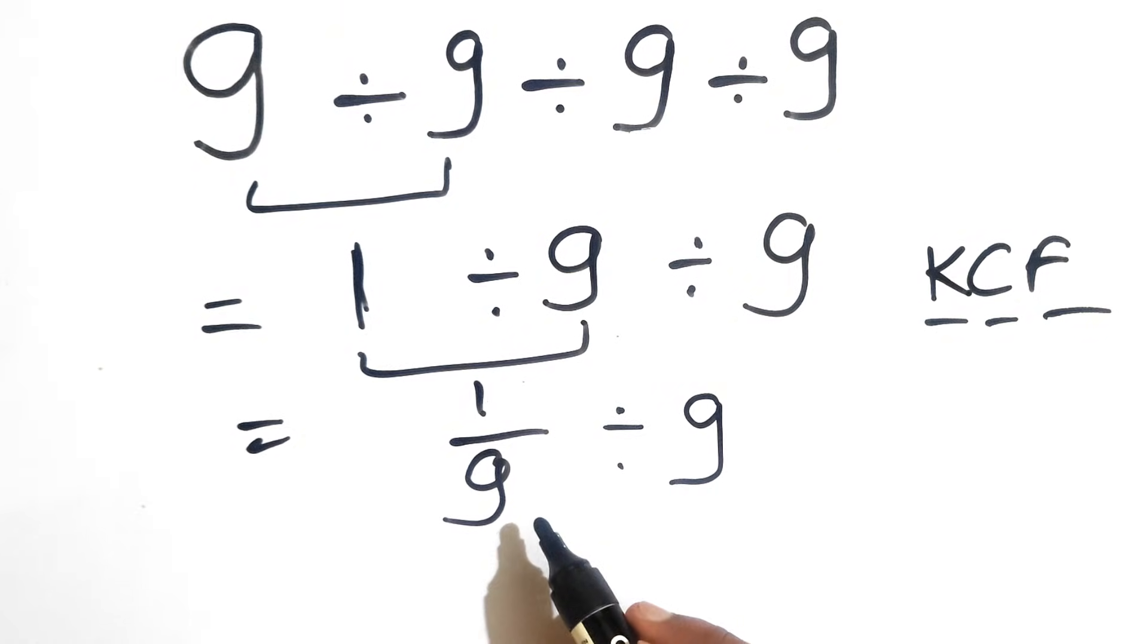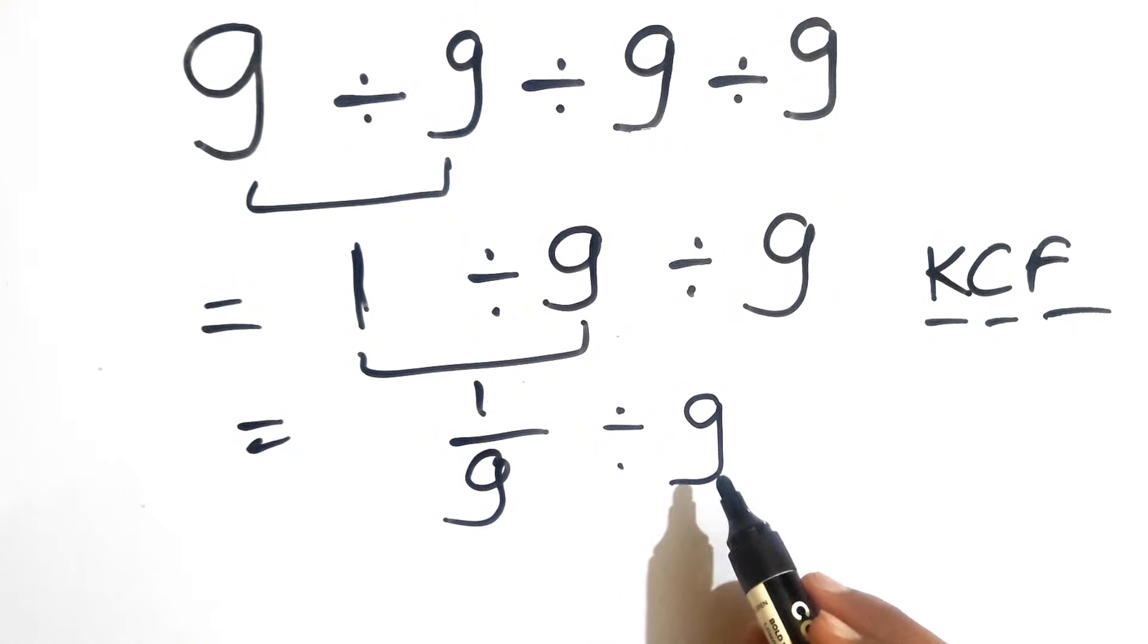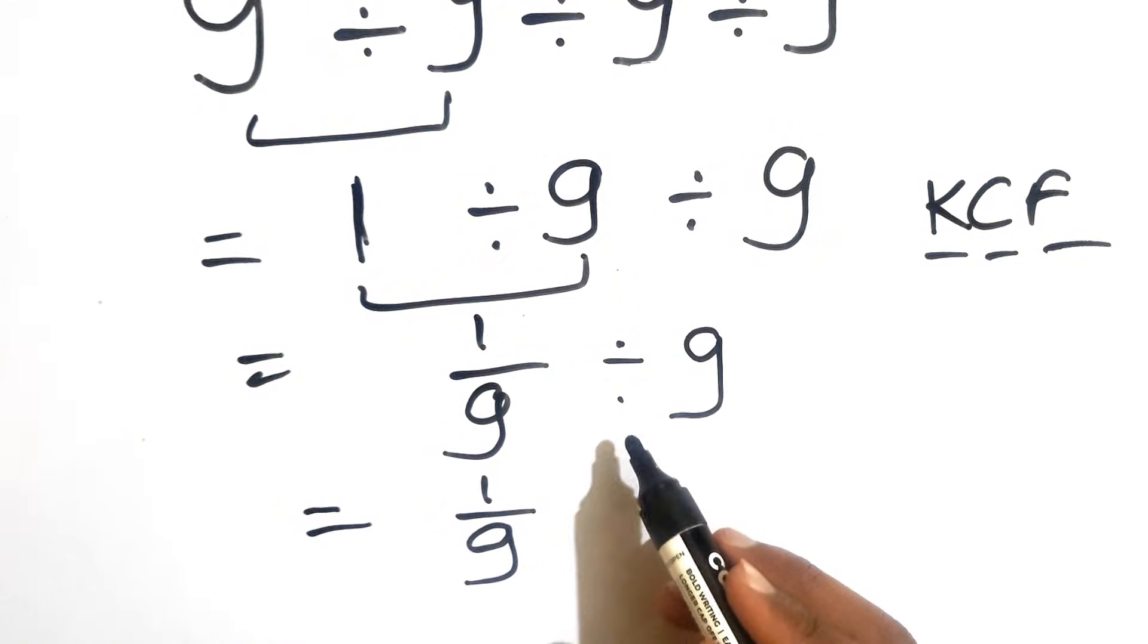We need to keep this 1 over 9 as it is, we need to change the division sign into multiplication, and we need to flip this 9. So we can write this as 1 over 9, this division will change into multiplication, and this 9 will be changed as 1 over 9 because we have flipped this 9.